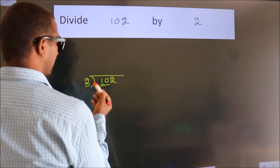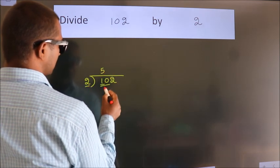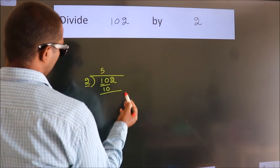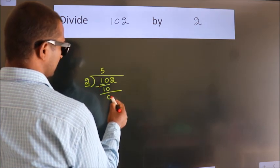When do we get 10? In the 2 table, 2 times 5 is 10. Now we subtract, we get 0.